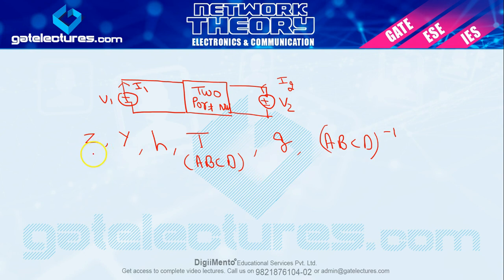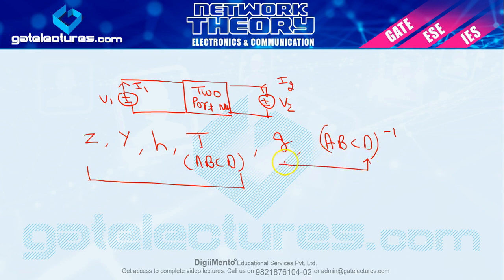The Z parameter is called the impedance parameter. Y parameter is called the admittance parameter. H parameter is called the hybrid parameter. T parameter is called the transmission parameter. The first four parameters are very important for GATE, ESE, and PSU examinations. The last two — G parameter, which is the inverse of H, and ABCD inverse parameter — are not as important, but we will still cover them briefly. We will do a detailed study of the first four parameters.